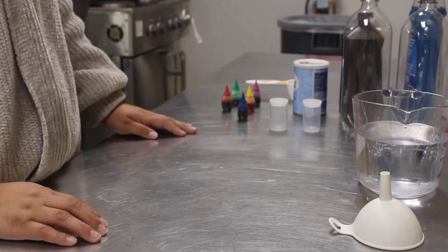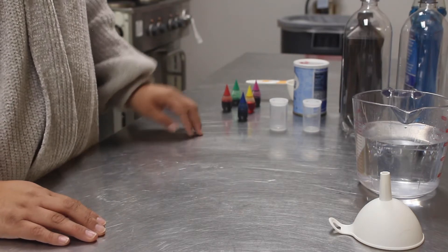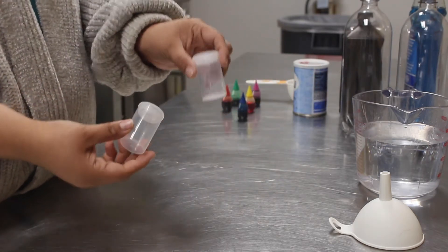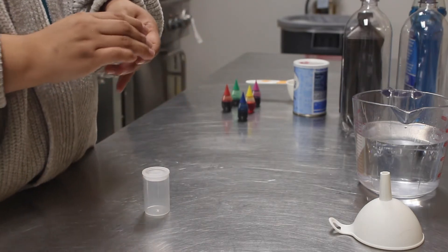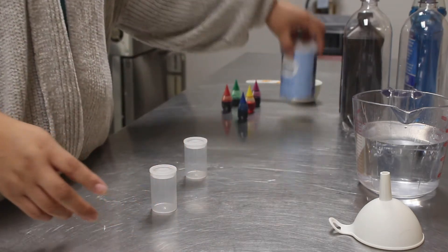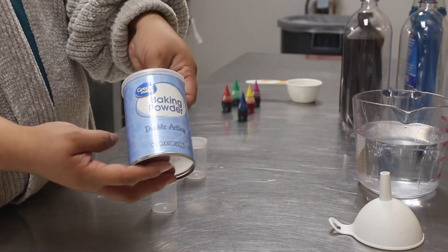So, this Pop-A-Rocket, the materials you need is two film canisters, and at least one of them needs a lid on it, and then you need baking powder and water.